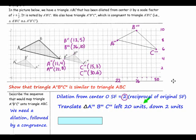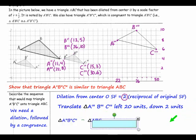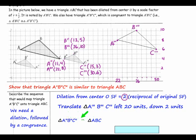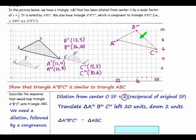After our translation left 20 units and down 2 units, we now have triangle A double prime, B double prime, C double prime similar to triangle ABC. Reviewing our steps: our goal was to show that these two triangles are similar. We started with a dilation followed by a congruence. The dilation changes the size — we dilated using the reciprocal of the original scale factor. Then we did a translation showing that this triangle could be mapped onto the original one.